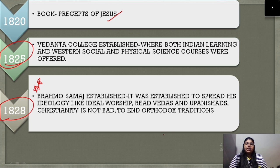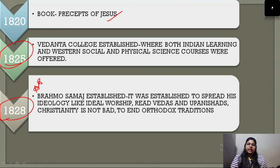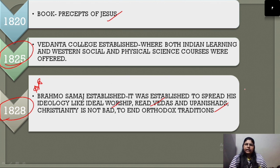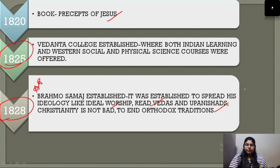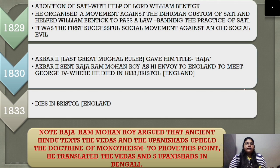The Brahmo Society was established to spread his ideology — opposing idol worship, caste traditions, and orthodox practices. In 1829, Sati was abolished. Raja Ram Mohan Roy played a key role in its abolition through Lord William Bentinck.